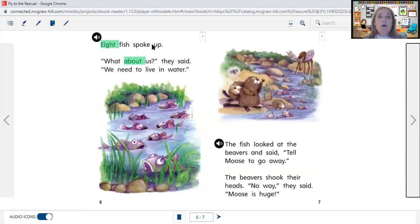Eight fish spoke up. 'What about us?' they said. 'We need to live in water.' The fish looked at the beavers and said, 'Tell Moose to go away.' The beavers shook their heads. 'No way,' they said. 'Moose is huge.' So over here we have eight fish. Let's count: one, two, three, four, five, six, seven, eight. Sure enough we do have eight fish. They say they needed the water. They have to have that water to live in. They wanted Moose to go away too. But the beavers didn't want to tell him. I mean my goodness, he's way bigger than they are.